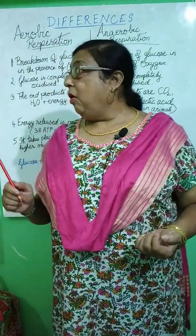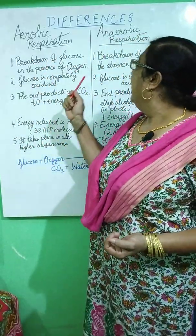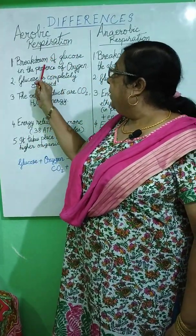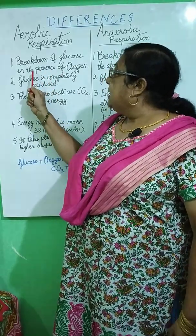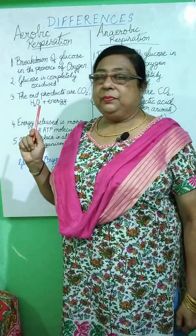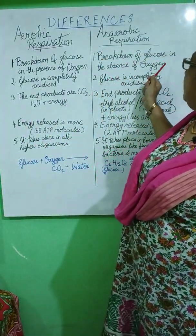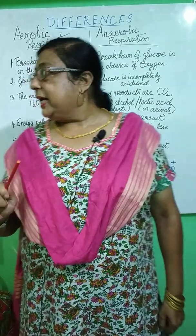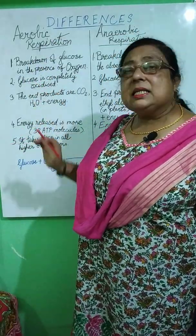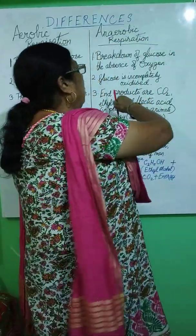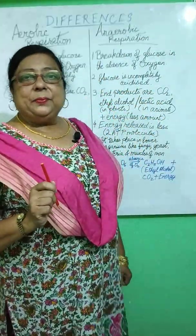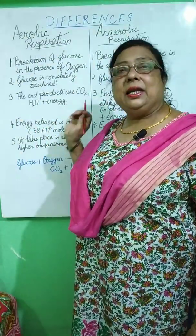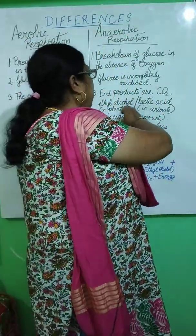Now we come to the details comparing aerobic and anaerobic respiration. In aerobic respiration, breakdown of glucose takes place in the presence of oxygen, and glucose is completely oxidized. In anaerobic respiration, breakdown of glucose takes place in the absence of oxygen, and glucose is incompletely oxidized. The end products of aerobic respiration are carbon dioxide, water, and energy.